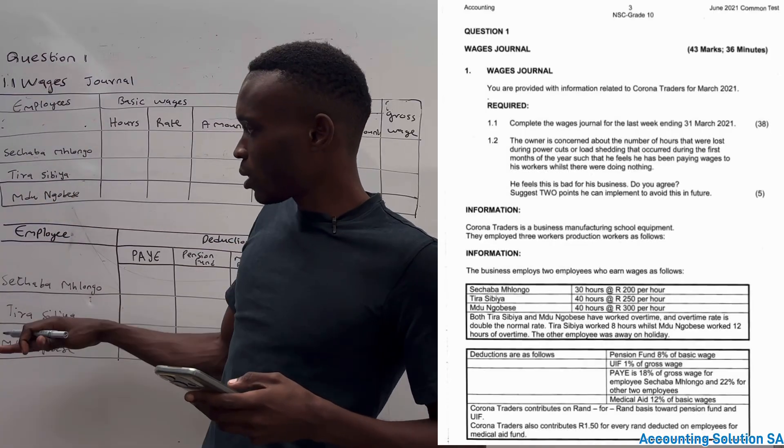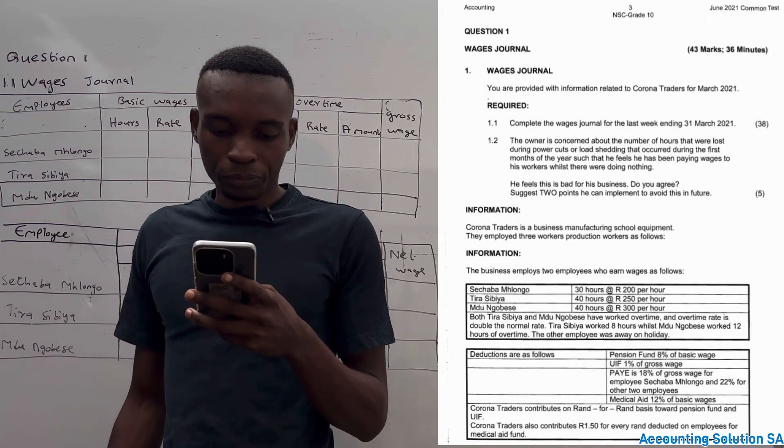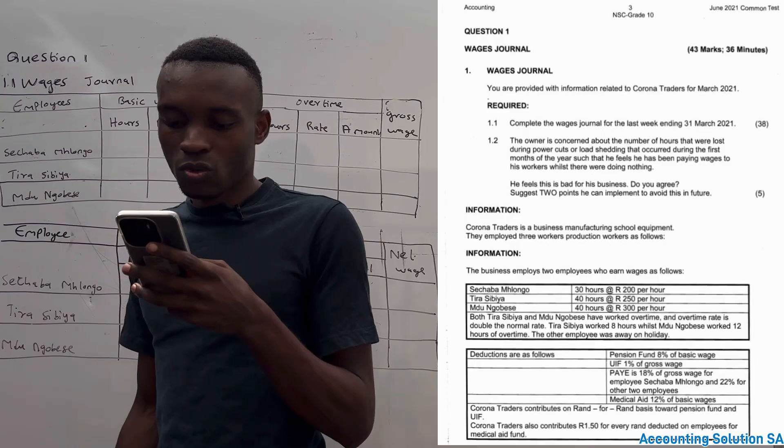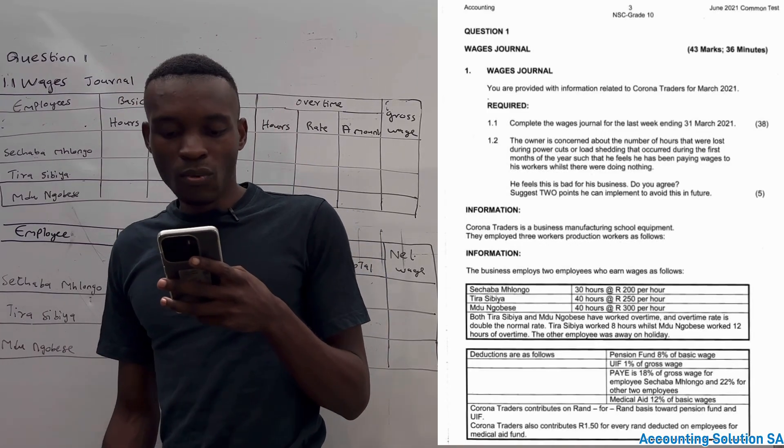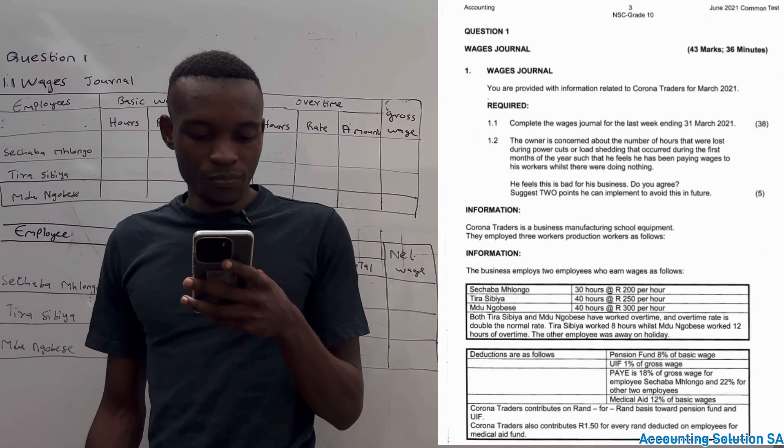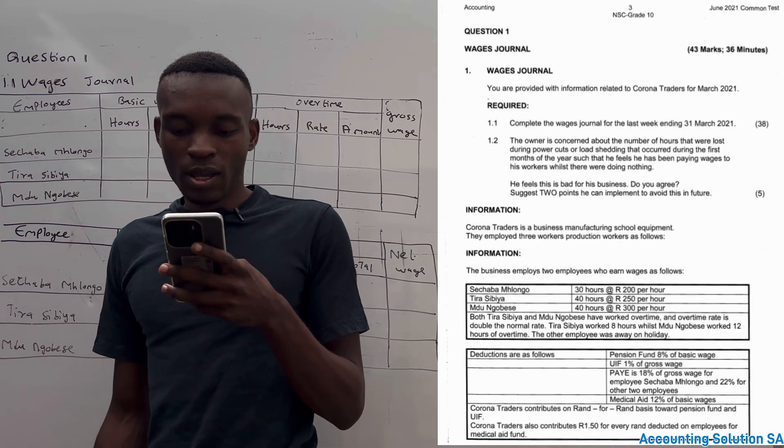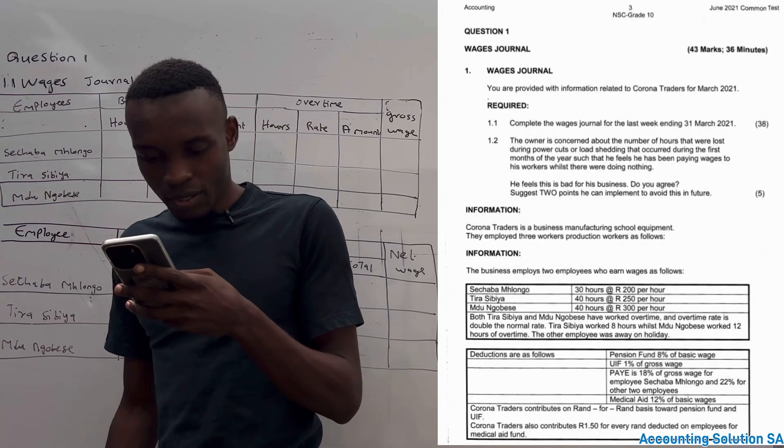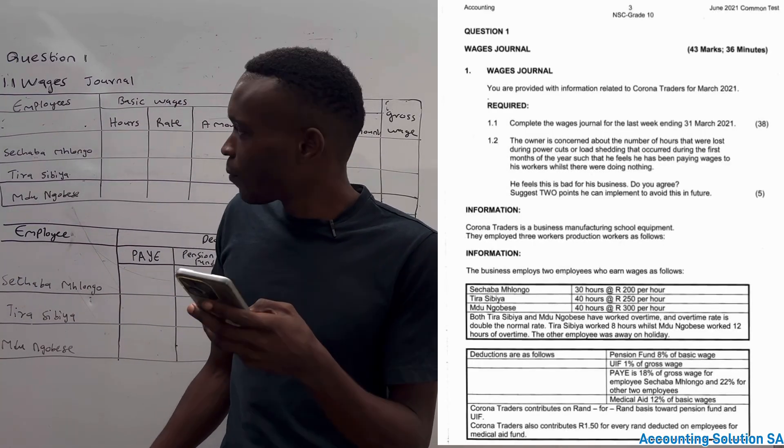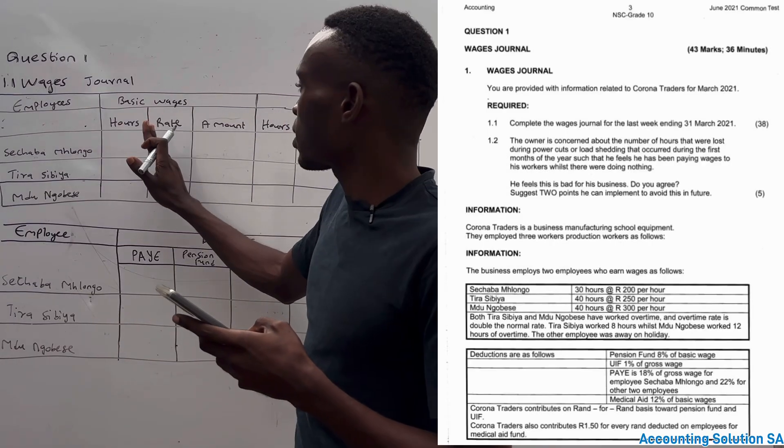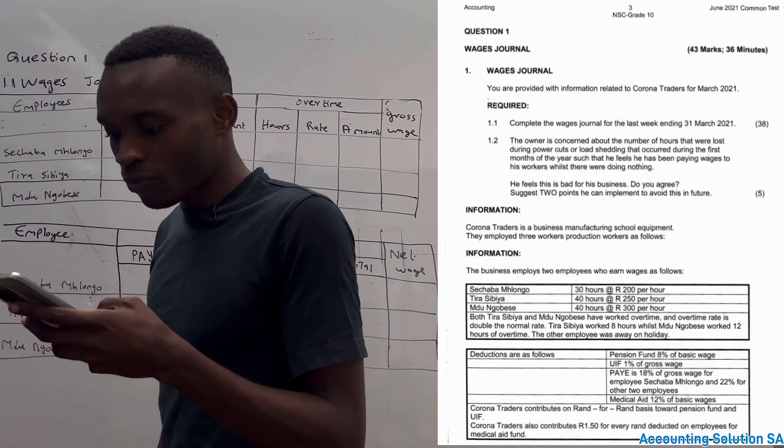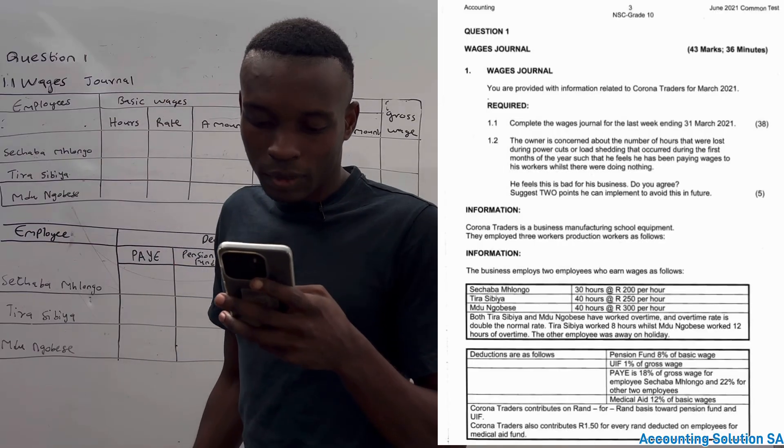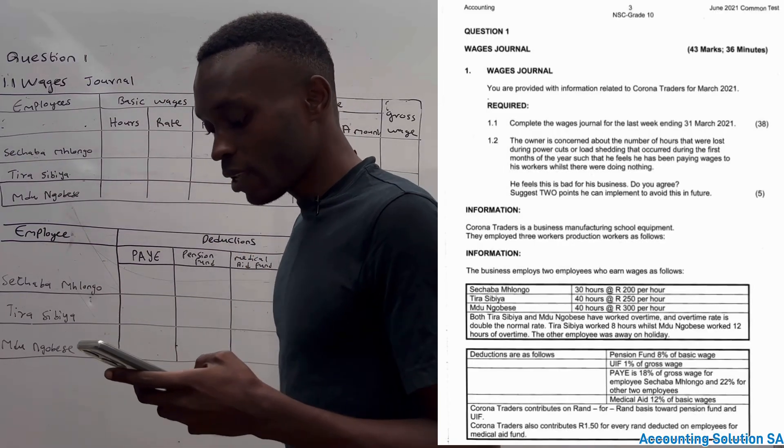This is the answer book that we were provided. Now let's go straight to the question information. Corona Traders is a business manufacturing school equipment. They employ three workers in production. Information: the business employs three employees who earn a wage as follows. We have Tira, Severe, and Mdudu. They give us a basic salary as well as overtime. So the first part we are going to calculate basic wage, and after that we're going to calculate overtime. It's very simple, it's like copy and paste, but you have to do some calculation.